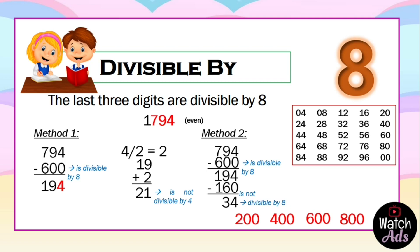Don't worry if you subtracted 80 from 194 and then subtracted another 80 — it still gives the same answer of 34, and 34 is not divisible by 8, which means that 1794 is not divisible by 8.